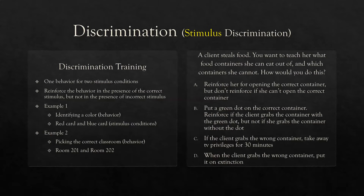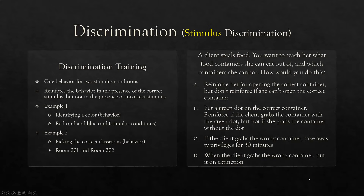You need to identify these key features in your questions. Option C — taking away TV privileges for 30 minutes — is more of a punishment procedure. Option D — putting it on extinction when she grabs the wrong container — is only part of the picture since there's no reinforcement of the correct container. B is the best answer: container with green dot gets reinforced, container without does not. That's differential reinforcement — that's how we teach stimulus discrimination.